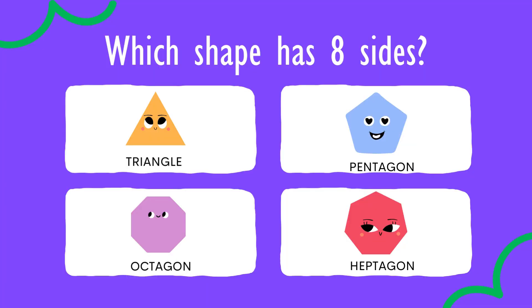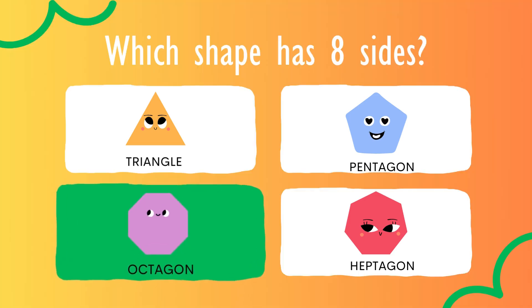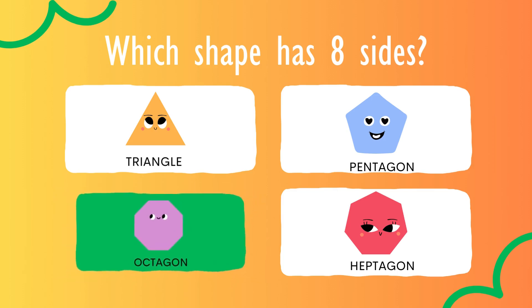Which shape has eight sides? Octagon. Octagon has eight sides.